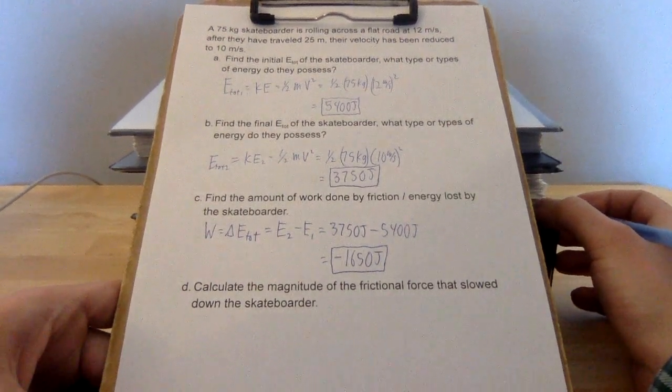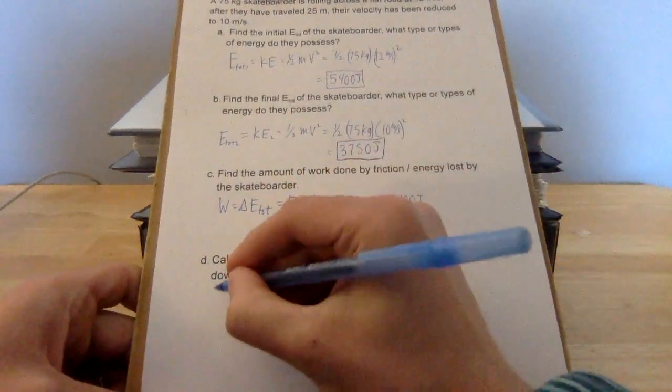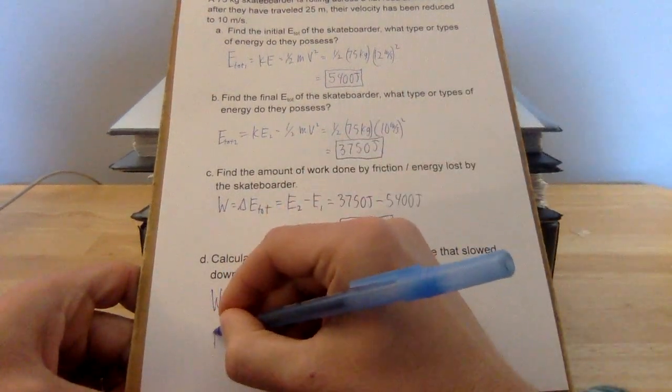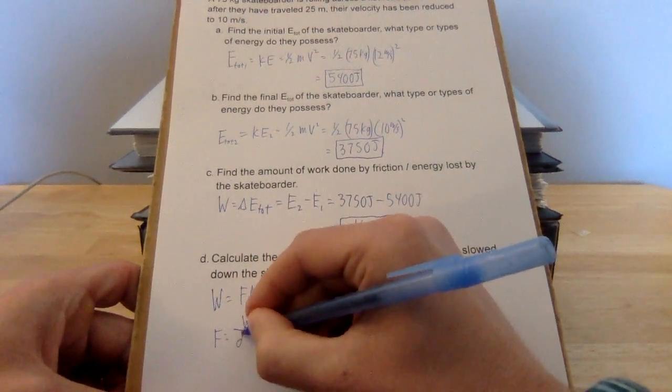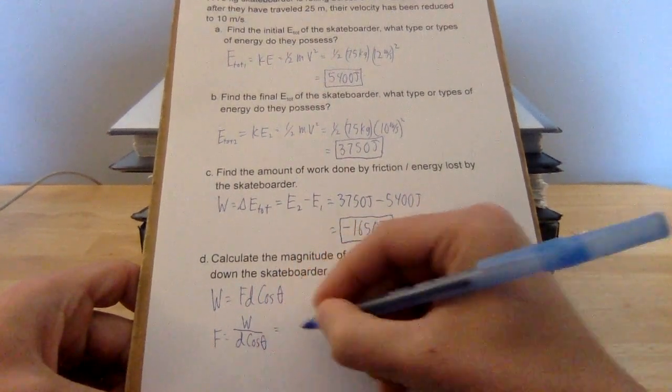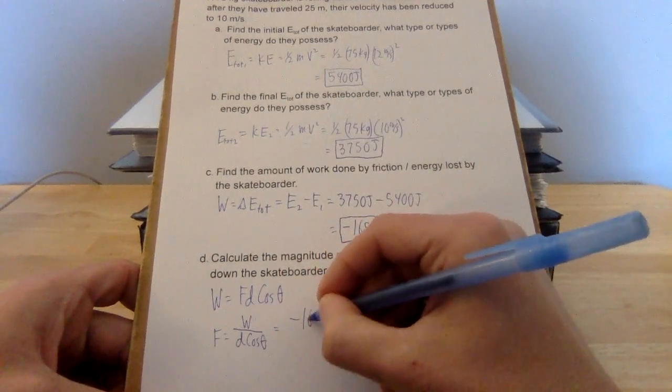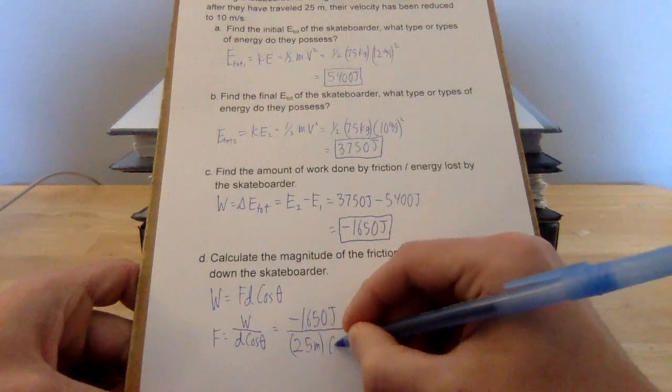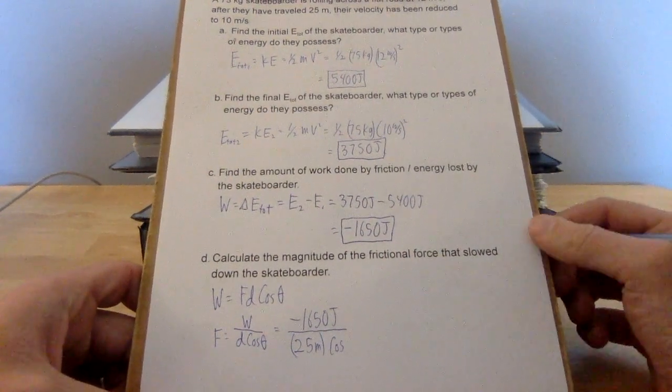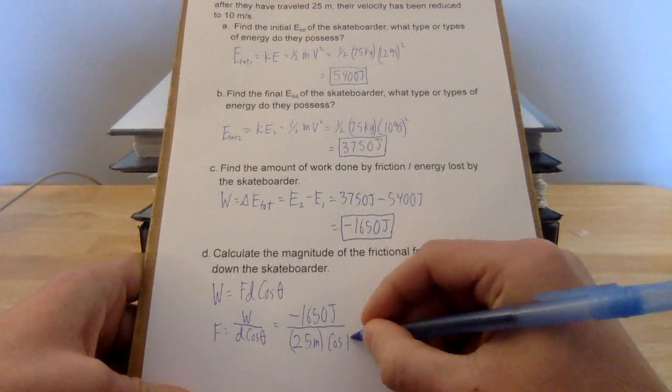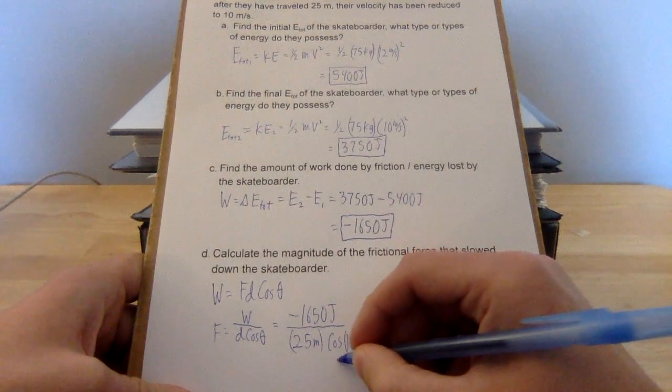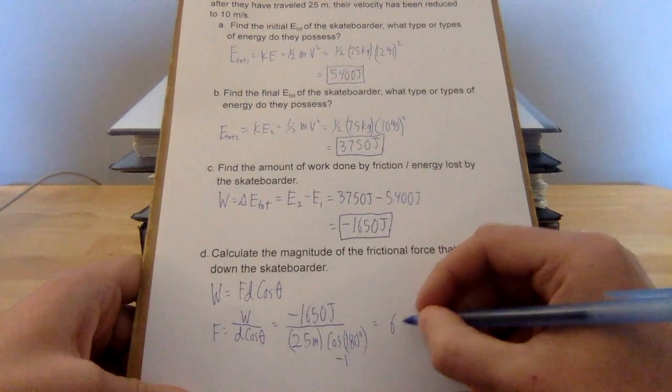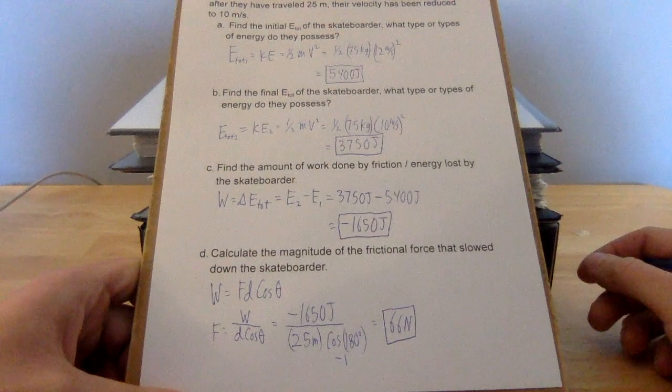Last thing we want to do in part D, calculate the amount of force. To find the amount of force, we are going to solve W equals Fd cos theta. Rearranging that for force, we get force equals W over D cos theta. The work was negative 1,650 joules. The displacement is 25 meters. In this scenario, the frictional force is going in the opposite direction that the skater is moving, so my theta value is 180 degrees and cosine of 180 becomes negative 1. So I have a negative over a negative, which gives me a positive answer. We get that the amount of force is equal to 66 newtons.